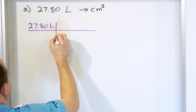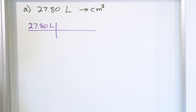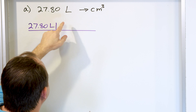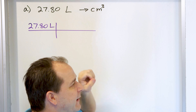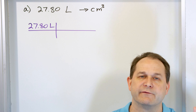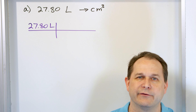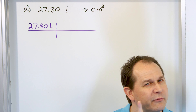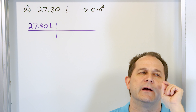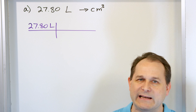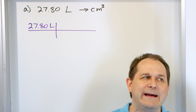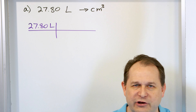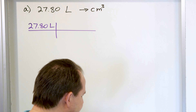And then what's our plan? We know that we can go from liters to milliliters because we know the metric conversion between liters and milliliters. And we also remember that a milliliter was the same thing as a cubic centimeter. So we can then go from milliliters to cubic centimeters. So that's our plan.